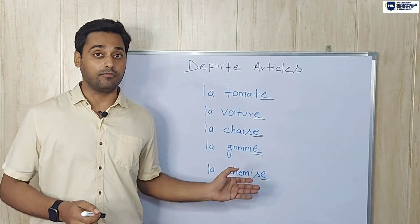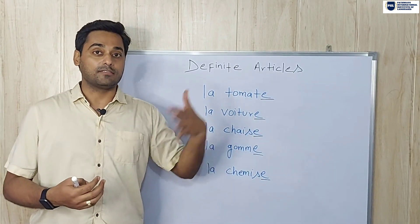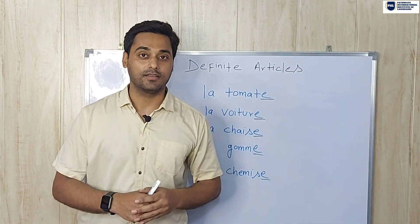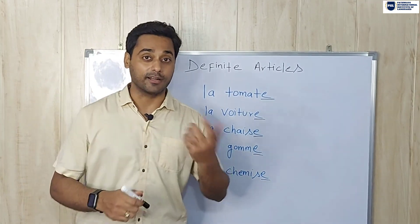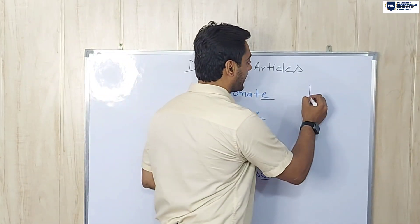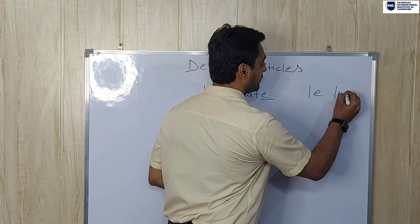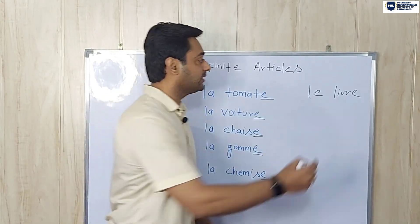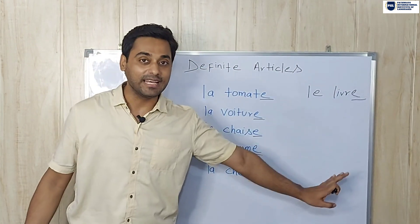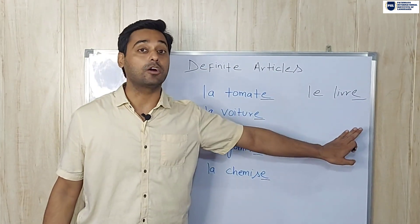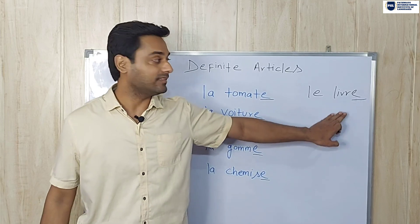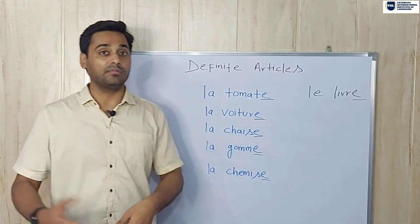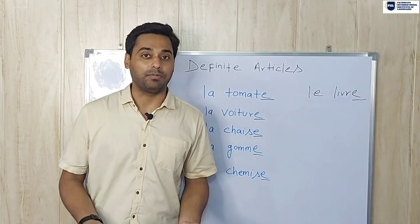But this rule is only applicable in 80% of cases. In 20% of cases, it is an exception. For example, look at 'le livre' — that means 'the book'. This noun also ends with 'e', but it is not feminine — it is masculine. So this noun is an exception. In 80% of cases the rule applies; in 20% it does not.